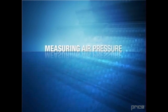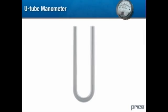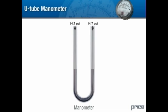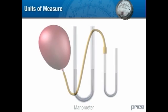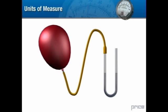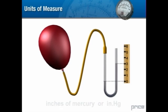Measuring air pressure. Consider a simple glass U-tube, commonly referred to as a manometer, partly filled with a liquid — for example, mercury — but open at both ends. The only pressure acting on the fluid is atmospheric. Because the atmospheric pressure is equal on both sides, the fluid is not displaced. But if one end of our U-tube is attached to some pressure source, and that pressure is higher than the atmospheric pressure, it will push the fluid to one side. The difference in fluid levels is proportional to the pressure in the balloon and becomes our means of measuring pressure. We can measure this difference and express the air pressure in the balloon in inches of mercury.